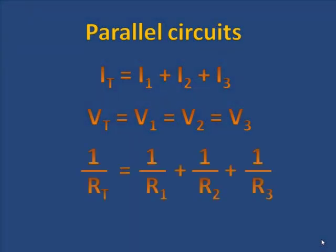And the total resistance, 1 over RT is equal to 1 over R1 plus 1 over R2 plus 1 over R3. And the total voltage in a circuit equals I times the total resistance. Learn these well.